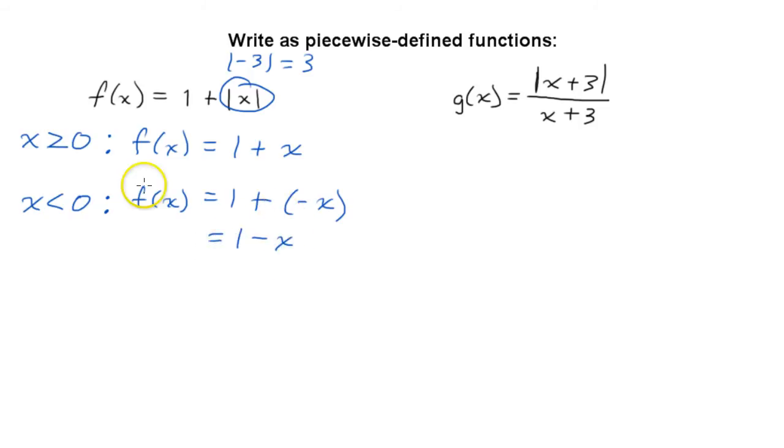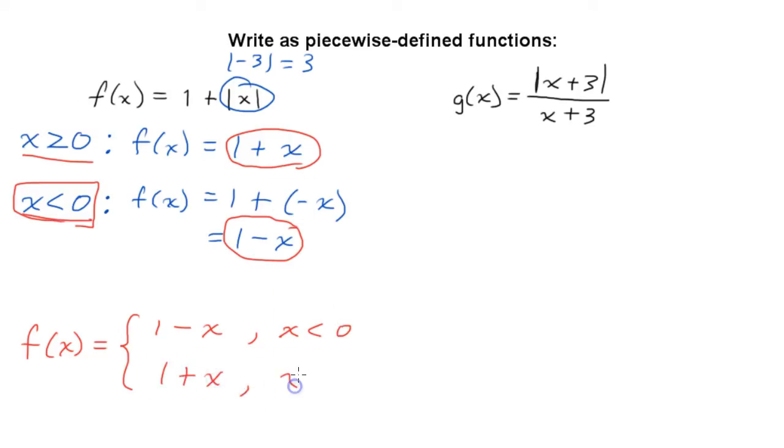So these are our two pieces, 1 minus x and 1 plus x, and it's for these conditions. So to write it in our algebraic notation for writing piecewise defined functions, f of x equals, and then we put this large bracket. It equals 1 minus x. Usually we start with the lower x value first, so 1 minus x when x is less than 0, and 1 plus x when x is greater than or equal to 0.